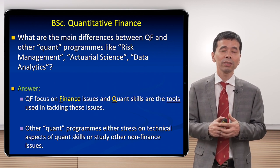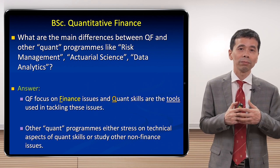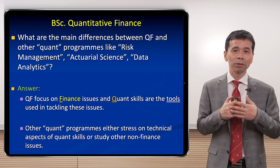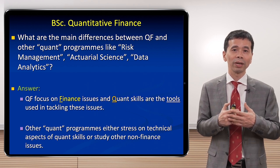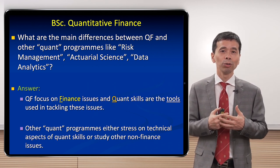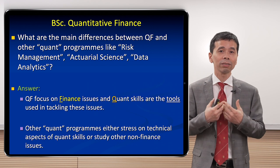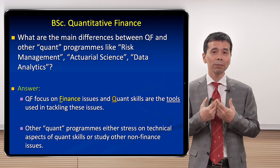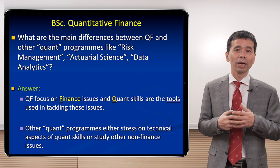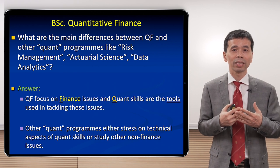For example, a student studying mathematics might spend a lot of time proving mathematical theories. But quantitative finance students use those mathematical theories as a tool to build financial models. Or take a computer science student — they might spend a lot of time perfecting the structure of a program so it runs faster. But QF students use programs developed by computer science specialists to write code to conduct algorithmic trading based on their understanding of the financial market.